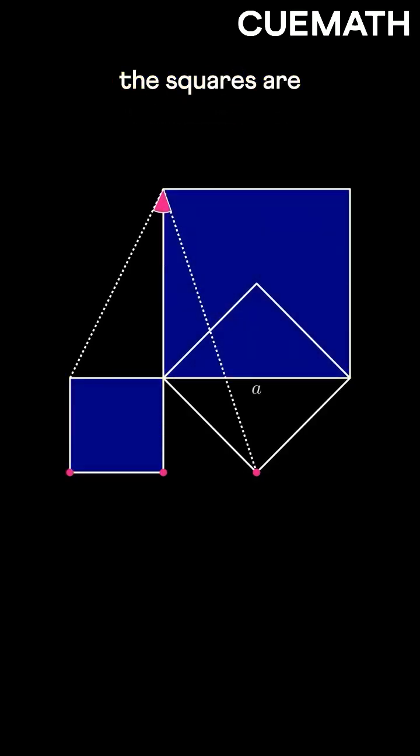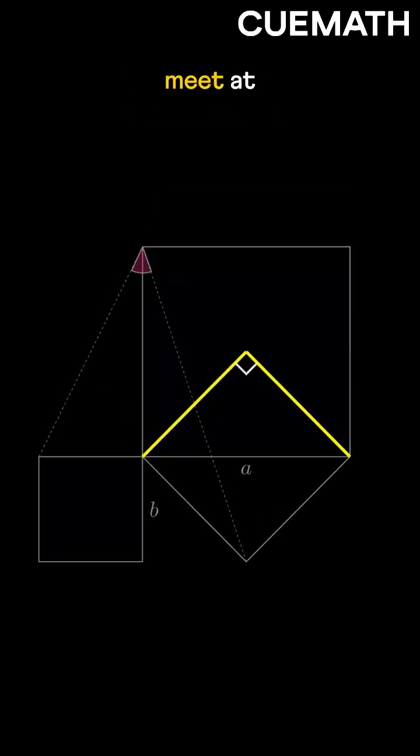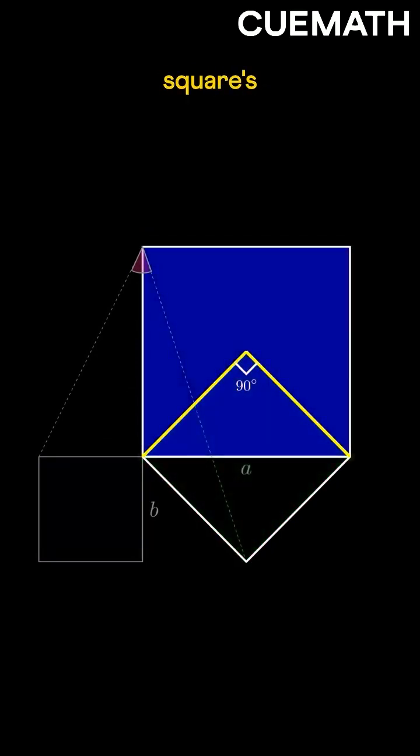Say the sides of the squares are A and B. These two lines meet at 90 degrees as they form the sides of this square. They also connect to the larger square's vertices.